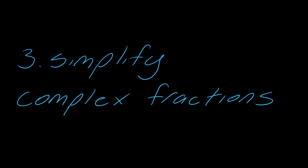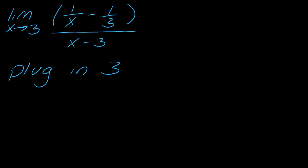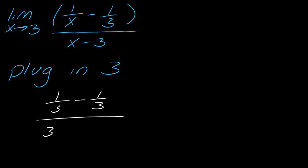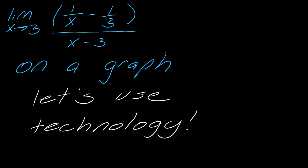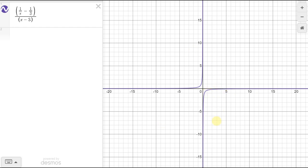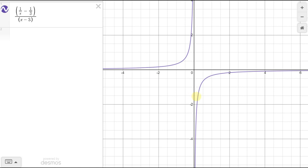The next trick is to simplify complex fractions. I've got the limit as x approaches 3 of this expression. When I plug in 3, I once again get 0 over 0. I want to drive home the fact that 0 over 0 indicates you might have to think a little differently — it's not necessarily that the limit does not exist. Using technology, let's take a quick look at the graph.